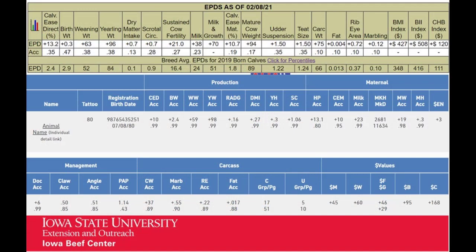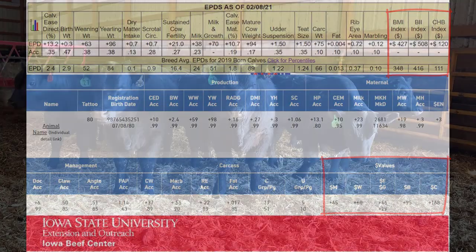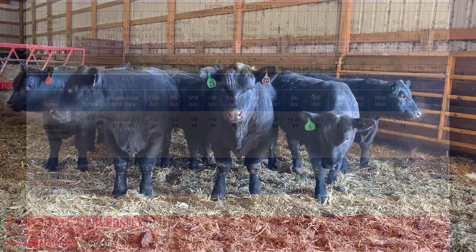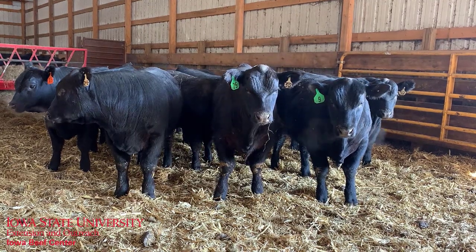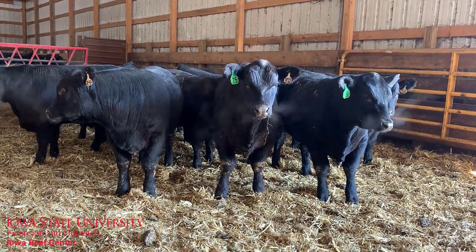Once you've established the short list of bulls that meet your criteria for calving ease, one of the simplest approaches is to look at dollar indexes, if they're available, and find the index that most closely fits how you're going to use the bull. Dollar indexes take into account genetic antagonisms between traits and help you avoid pitfalls in your selection process. If dollar indexes are simply unavailable, or a more targeted approach is what you're after, consider your market first.